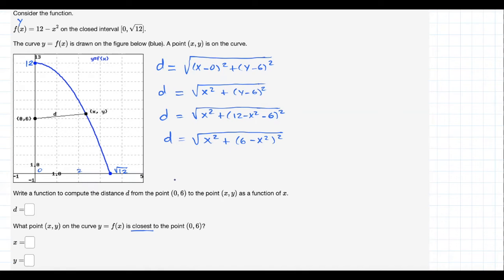Okay, so this is then an optimization problem where the goal is to minimize the distance function d. But notice that this is equivalent to minimize this polynomial function x squared plus (6 minus x squared) squared, right?